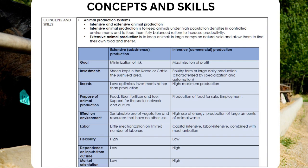Purpose of animal production includes food, fiber, fertilizer, and fuel — supporting the social network and culture, production of food for sale, and employment. Effects on the environment: extensive farming promotes sustainable use of vegetation and resources that have no other use, while intensive farming involves high use of energy and production of large amounts of animal waste. Labor: extensive uses little mechanization with an unlimited number of laborers; intensive is capital-intensive and labor-intensive combined with mechanization. Flexibility is high in extensive farming and low in intensive. Dependence on outside inputs is low for extensive and high for intensive. Market orientation is low for extensive and high for intensive.